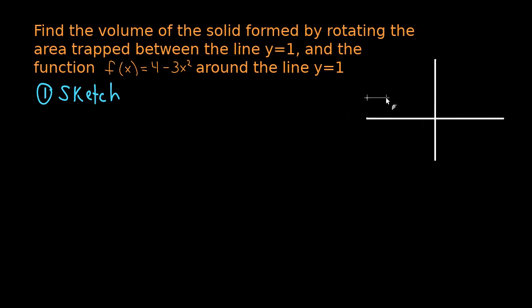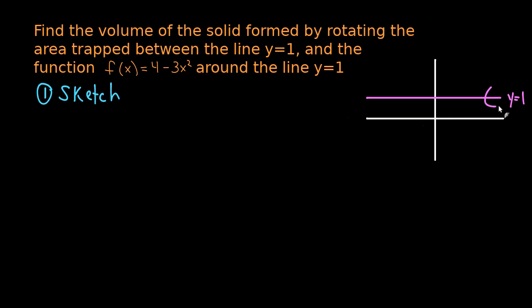We're being asked to find the volume of the solid formed by rotating the area trapped between the line y equals 1 and the function f(x) equals 4 minus 3x squared around the line y equals 1. The first piece of information is the line y equals 1, which is just a horizontal line, and this is also the axis of rotation.